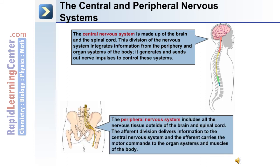The peripheral nervous system has an afferent division and an efferent division. The afferent division delivers information to the central nervous system. The efferent division carries the motor commands from the central nervous system to the organ systems and muscles of the body.